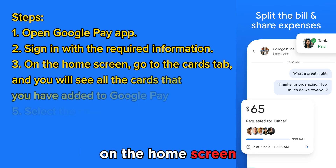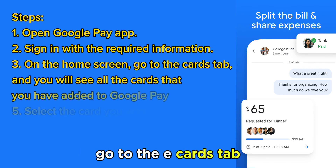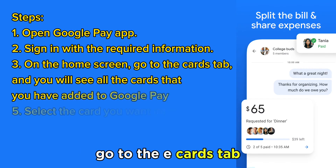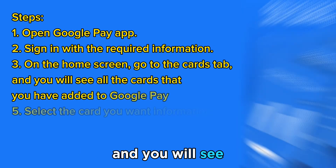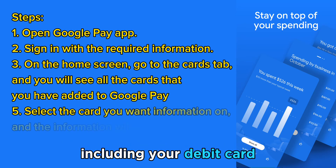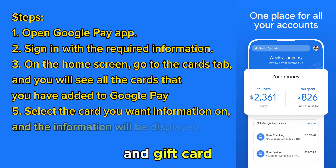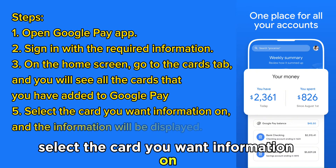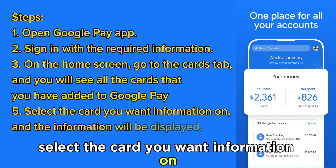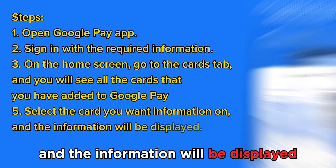On the home screen, go to the Cards tab and you will see all the cards that you've added to Google Pay, including your debit card, credit card, and gift cards. Select the card you want information on and the information will be displayed.